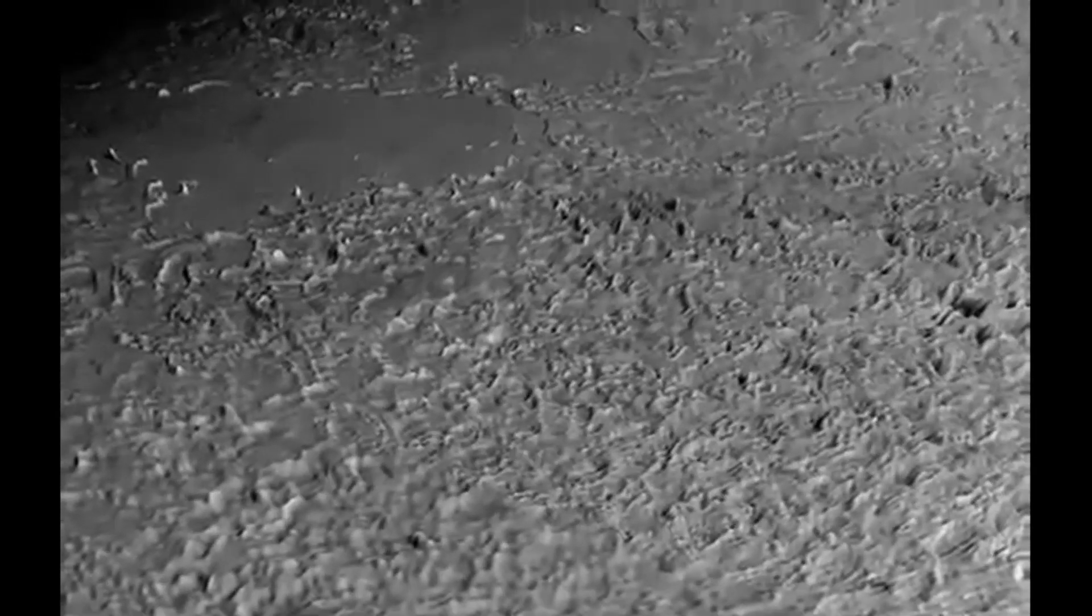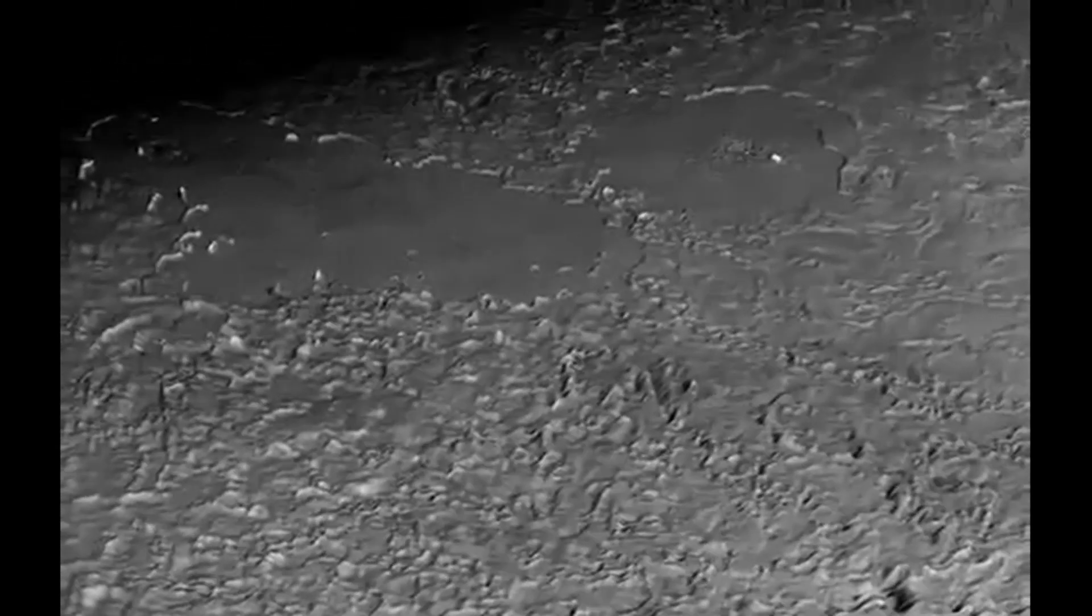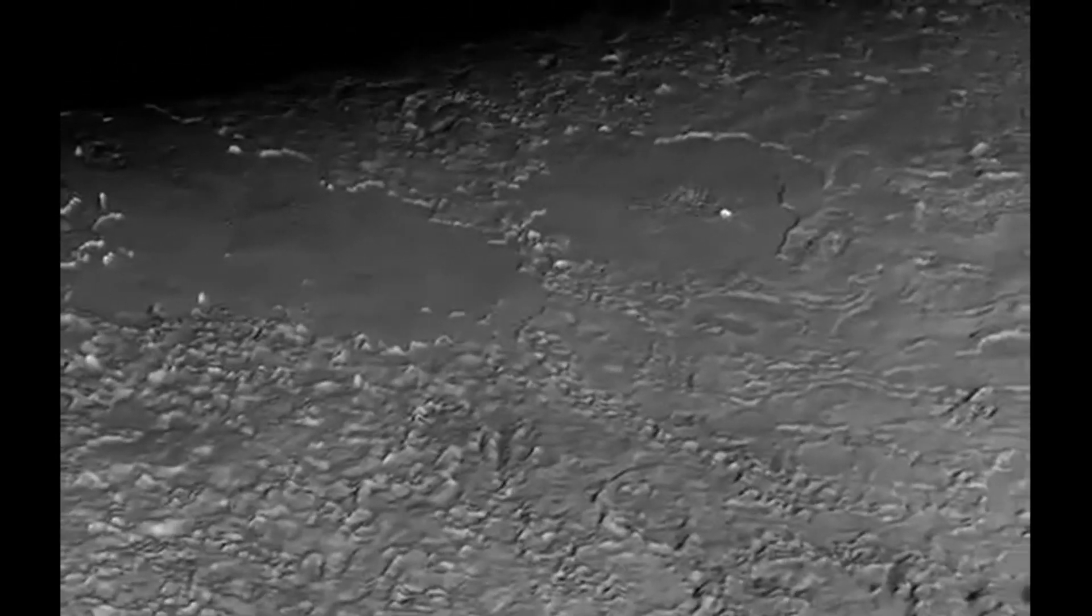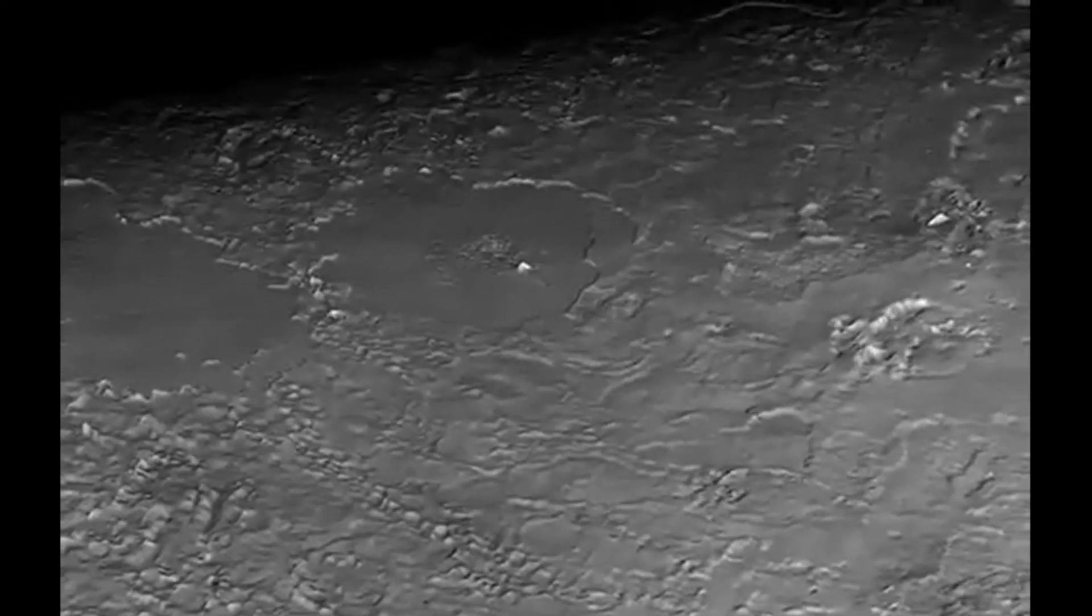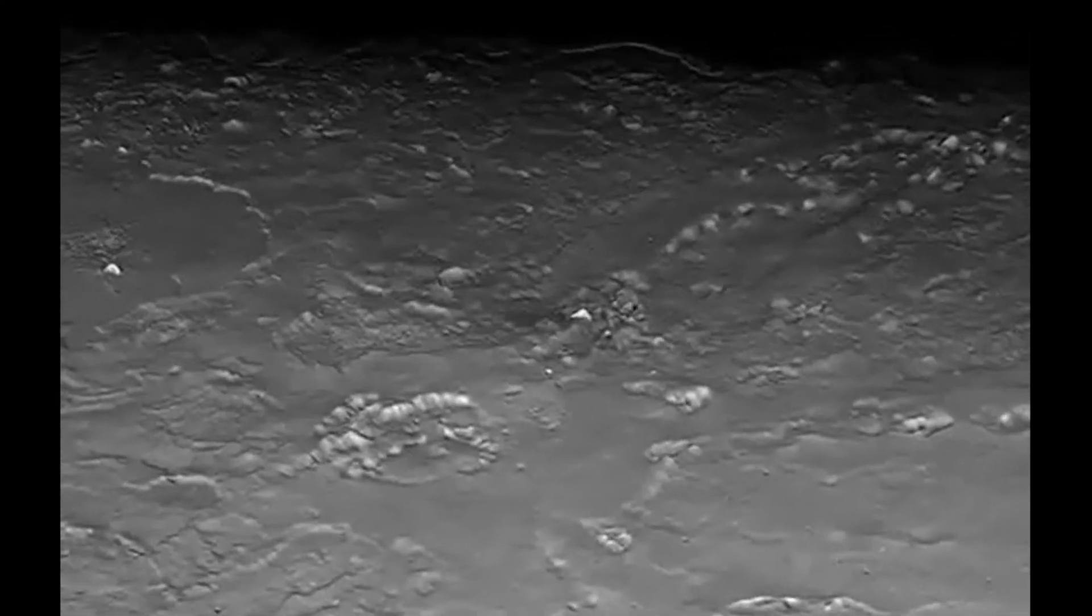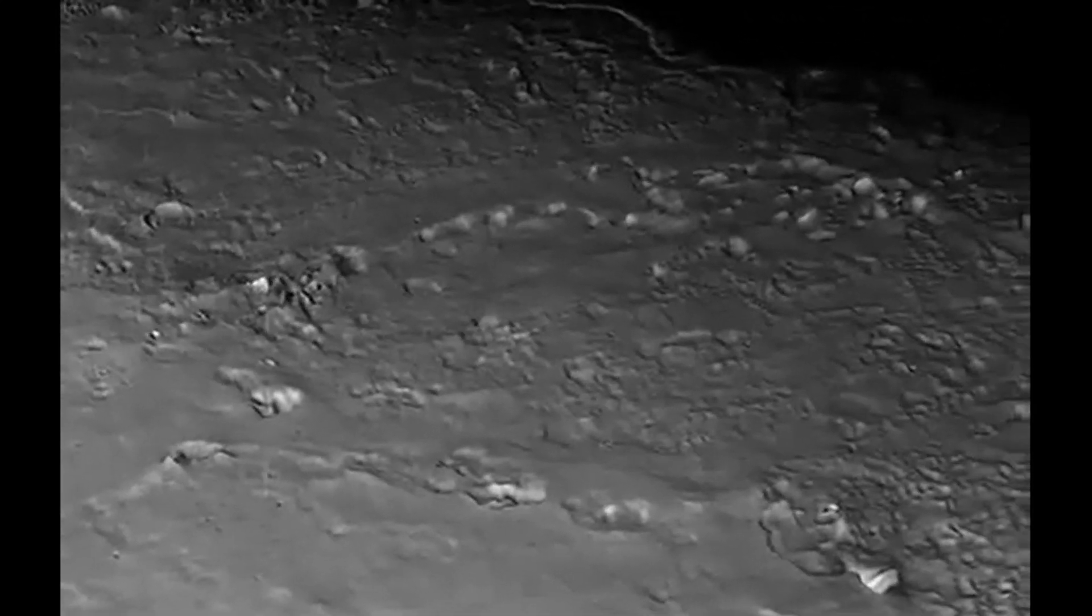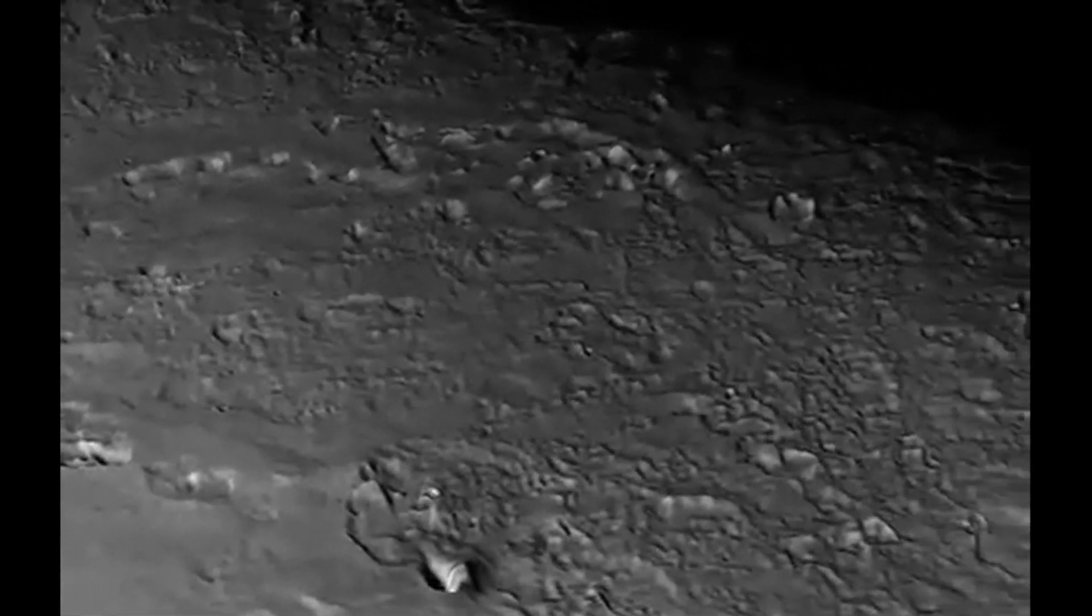Unlike every other large moon in the solar system, Triton orbits in the opposite direction to the spin of the planet. That means that it is unlikely Triton and Neptune formed at the same time. The most likely explanation is Triton is a visitor to the Neptunian system that never left.